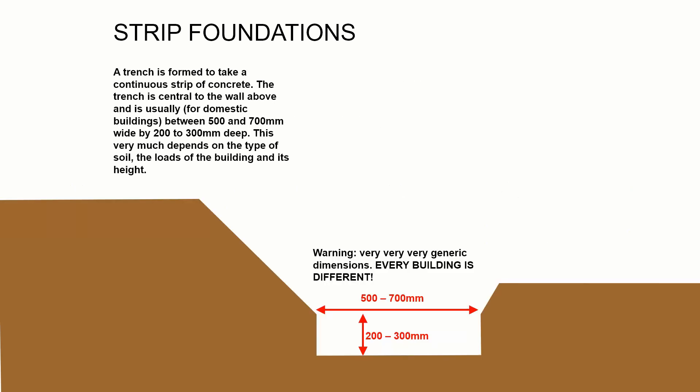The first step is to dig a trench using a mechanical digger to a specific width. The engineer would have designed the width to suit the soil and wall width, typically specifying between 500 and 700 millimeters wide by 200 to 300 millimeters deep. These are very generic dimensions — every building is different and there's no single foundation type that covers everything.